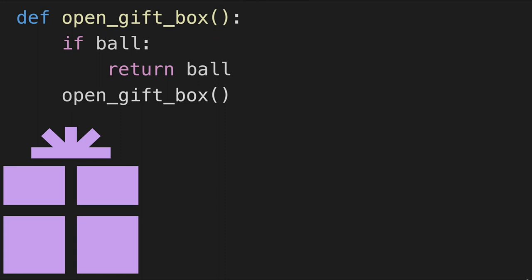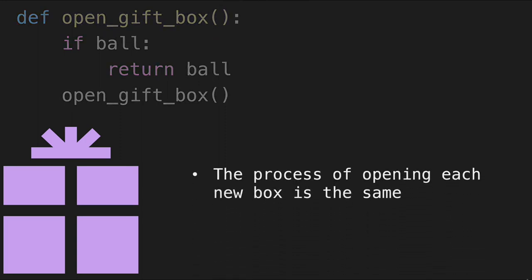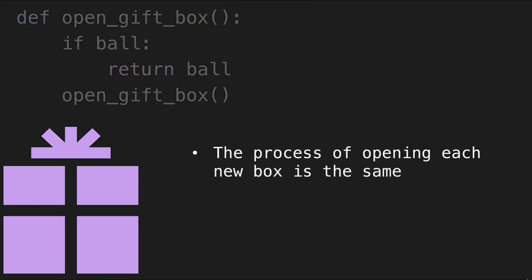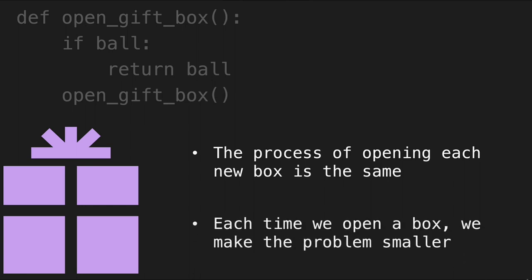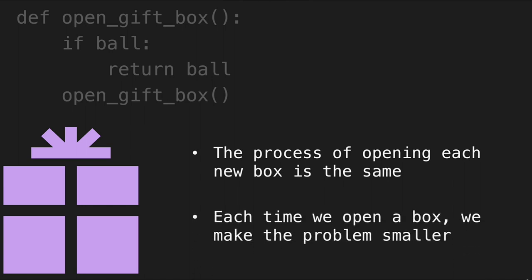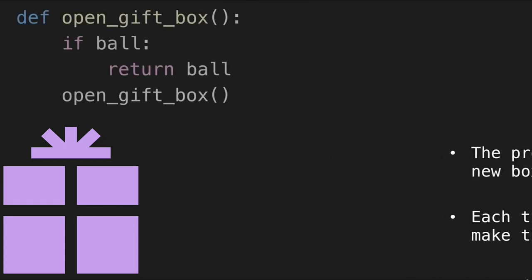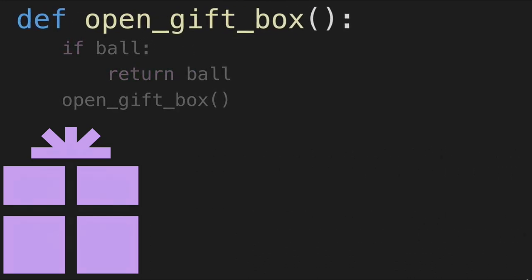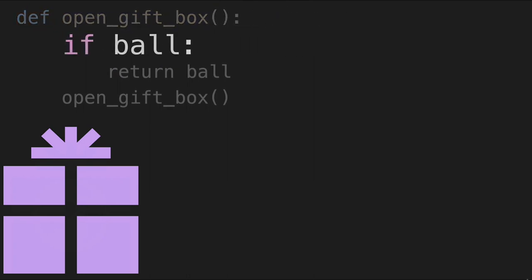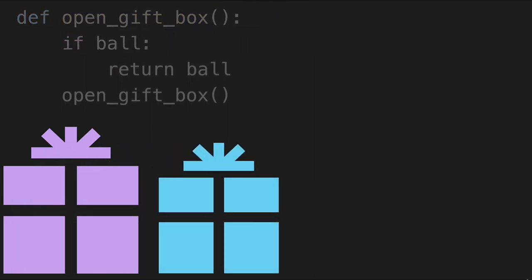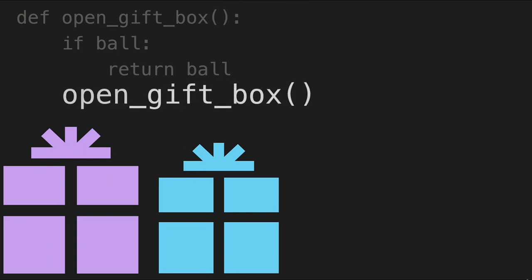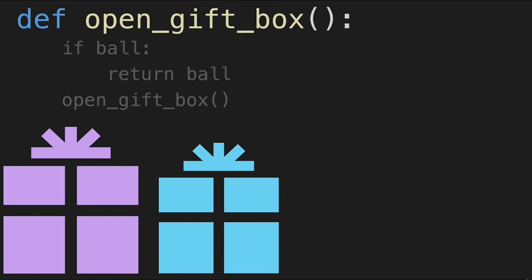There are a couple of things about recursion that are very important. First, the process of opening each new box is the same — whatever we're doing with recursion has to be the same. The other key point is each time we open a box, we make the problem smaller. So when we run open gift box and it's not a ball, we run it again — that's a second instance of the function being put on the call stack, which we'll discuss further in the next video.